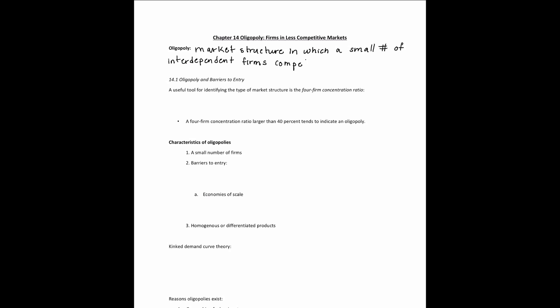Today we're going to be talking about our third type of market structure, which is an oligopoly. This is a market structure in which a small number — the keyword here is interdependent — firms compete against one another. The biggest takeaway from this chapter is the concept of interdependence, or the idea that every action a firm within an oligopoly does has a direct impact on another firm in the oligopoly.